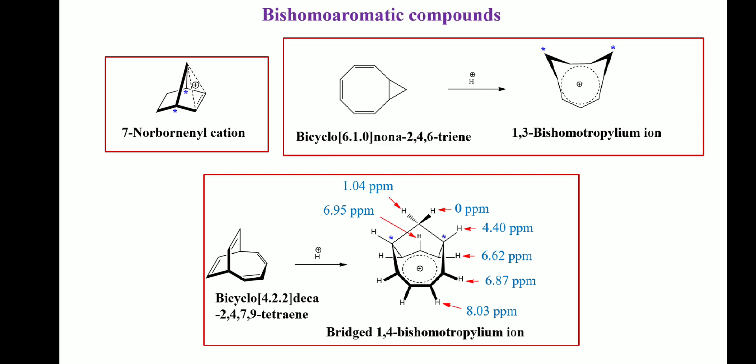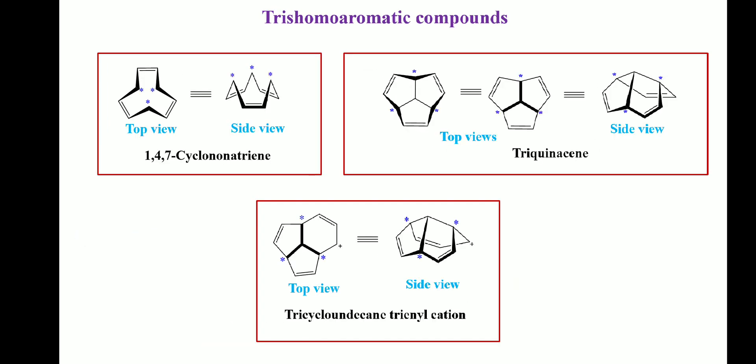7-norbornenyl cation, 1,3-bis homotropylium ion, and bridged 1,4-bis homotropylium ion are examples of bis homoaromatic compounds, since there are two bridges in these compounds — the starred atoms represent the bridges. 1,4,7-cyclononatriene, triquinacene, and tricycloundecanetrienyl cation with three bridges are examples of tris homoaromatic compounds, where the bridged atoms are shown by stars. Both top and side views of these molecules are given.